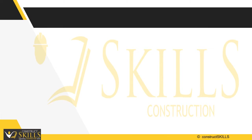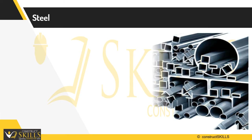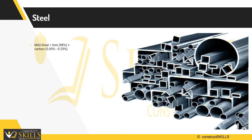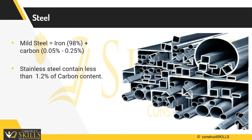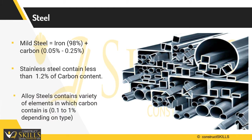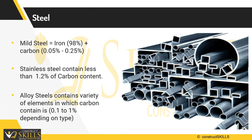Depending upon physical property and chemical content, steel can be classified into different types. First, mild steel — it consists of a major proportion of iron, say 98%, combined with less than 0.05 to 0.25% carbon. Second, stainless steel — it contains less than 1.2% carbon content and is corrosion and oxidation resistant. Third, alloy steel — it is a mixture of additional elements such as manganese, chromium, and nickel, with carbon content of 0.1 to 1% depending on type.